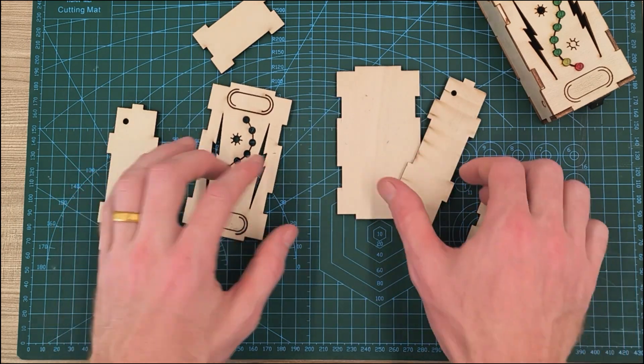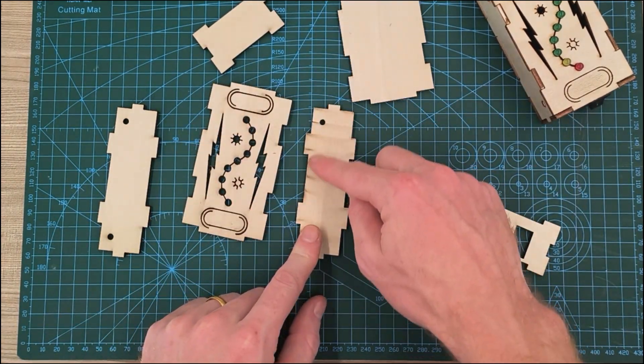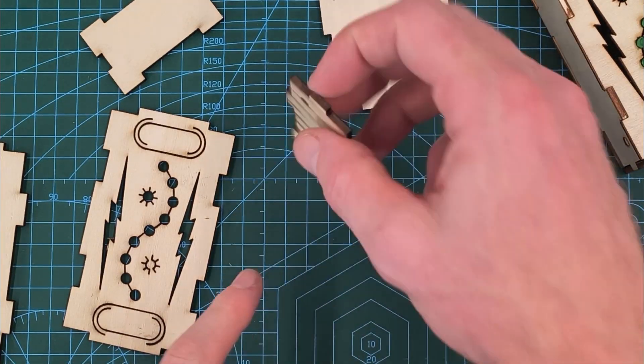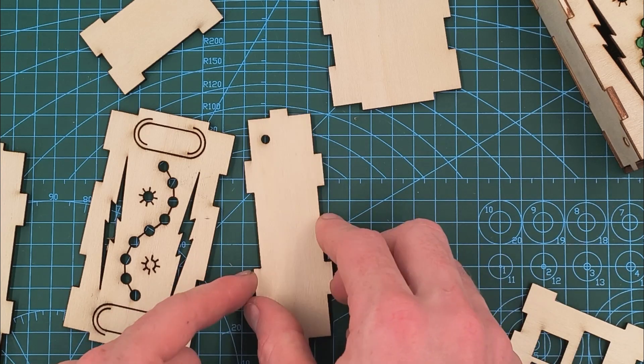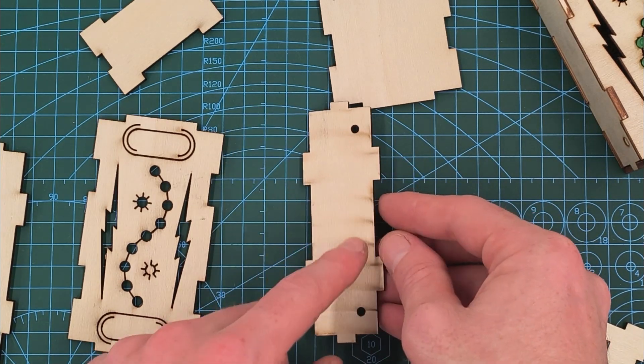Now if you look, usually there's a burnt side because the laser is cutting, and then there's a clean side. So what you want to make sure is that the clean sides are on the outside and the burnt sides would be in.